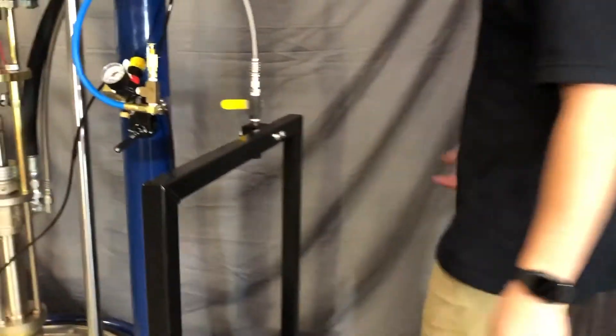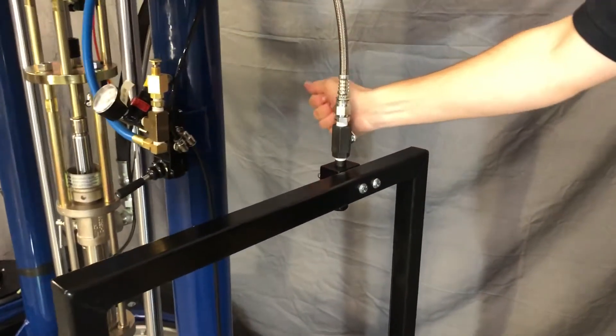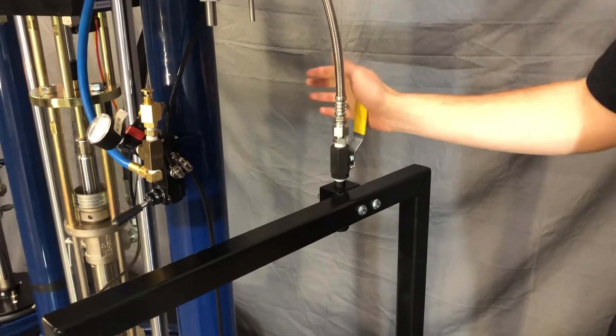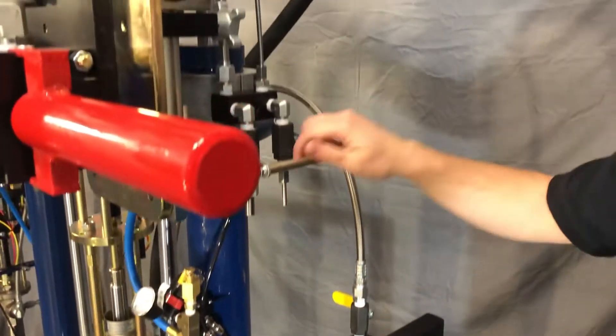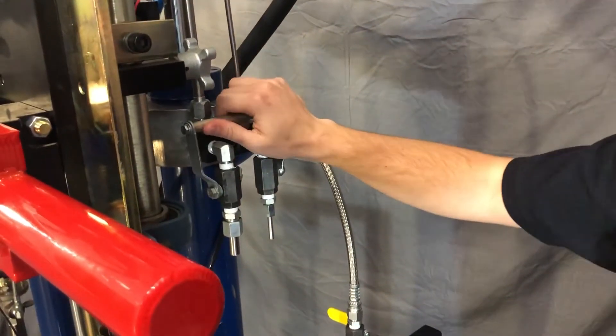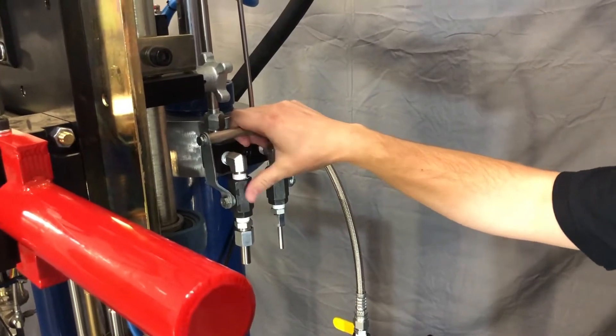Features include a break time purge system to pump base through the static mixer so use for later and a ratio check system on the side of the cart to make sure your machine is always in ratio.